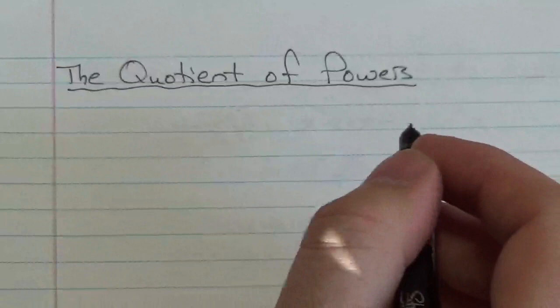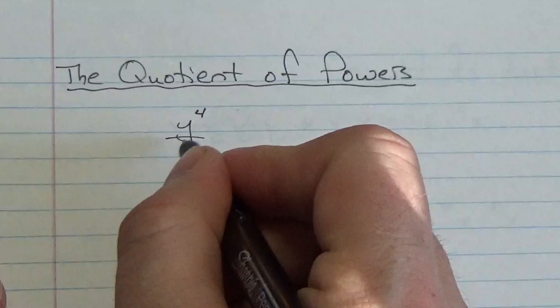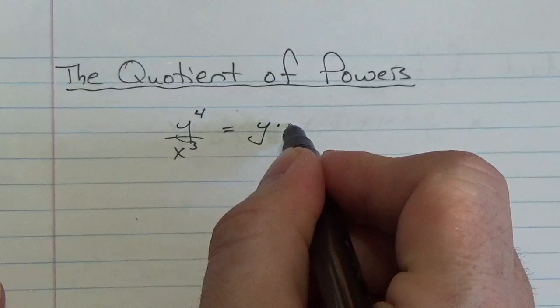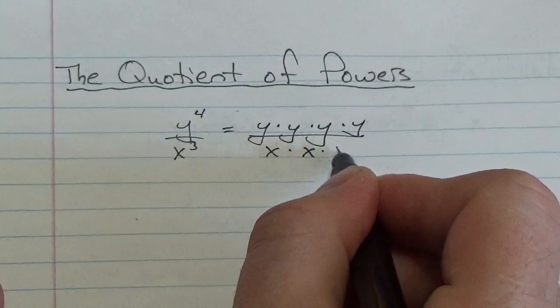So I'm going to start this one the same way I did the product of powers. If we take a look at, let's say, y to the fourth over x cubed, what this is telling us is that in the numerator I have got four factors of y, and in the denominator I've got three factors of x.